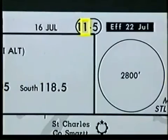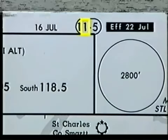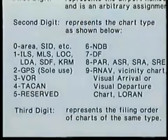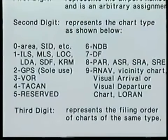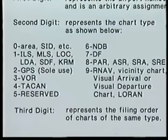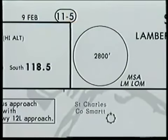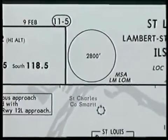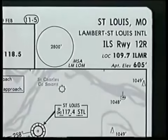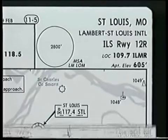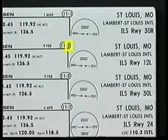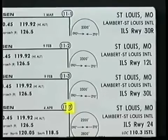The second digit indicates the chart type. The meaning of each digit can be found in the introduction section of your airway manual. You should refer to this section whenever you're in doubt about the meaning of a particular symbol. The last digit is used for filing more than one approach of the same type. For example, 11-5 is the ILS runway 1-2 right approach at Lambert St. Louis International Airport. 11-1, 2, 3, and 7 are other ILS approaches at St. Louis.